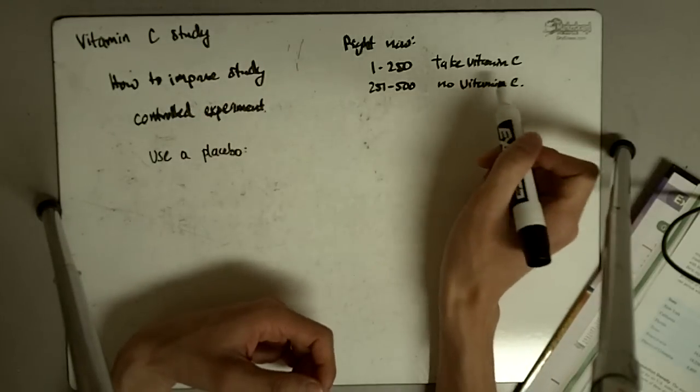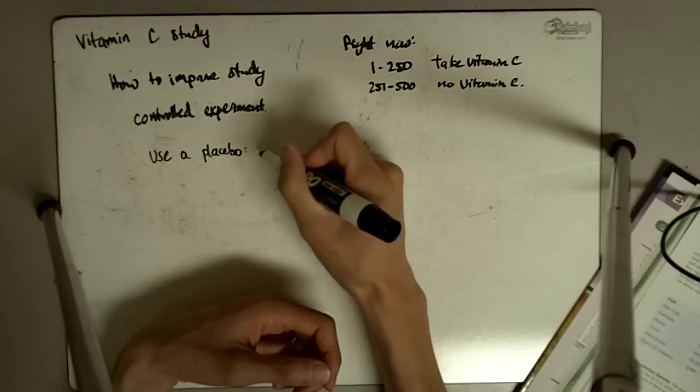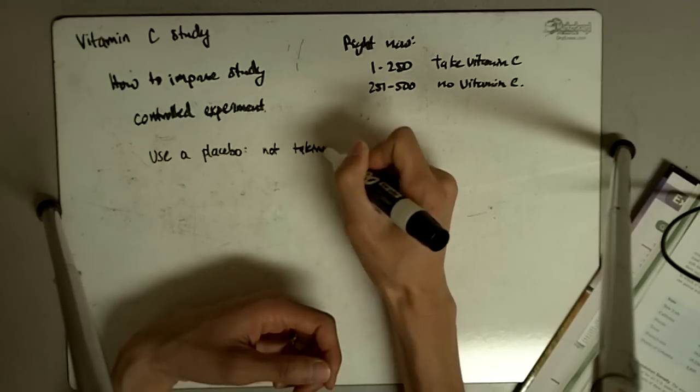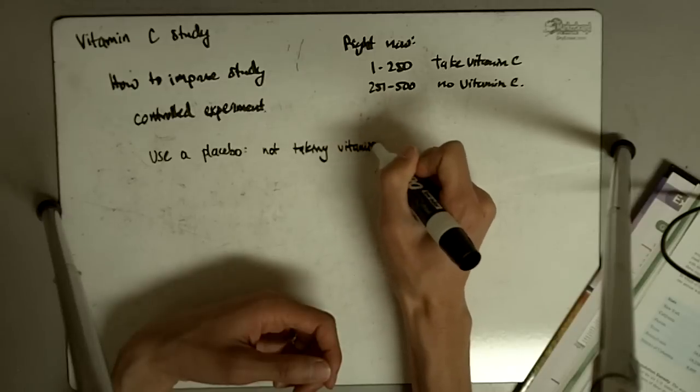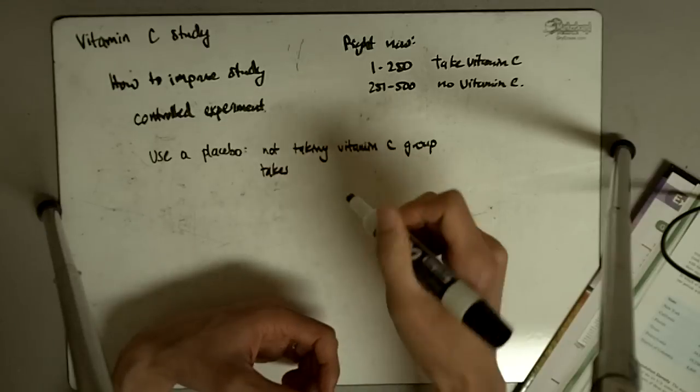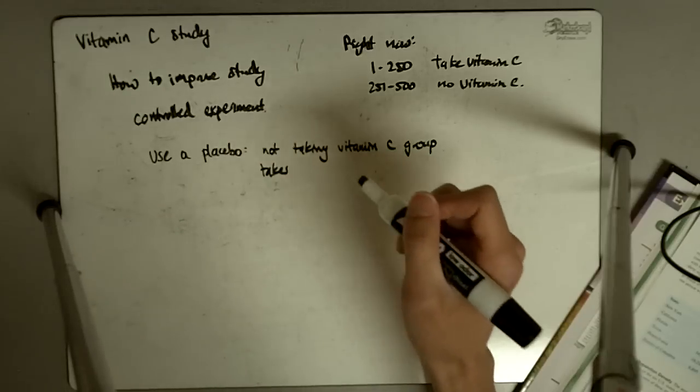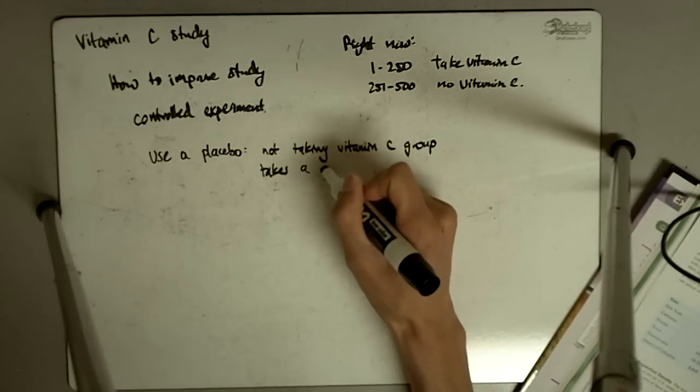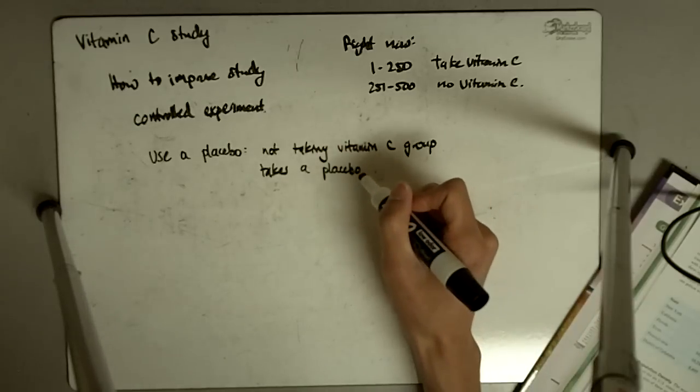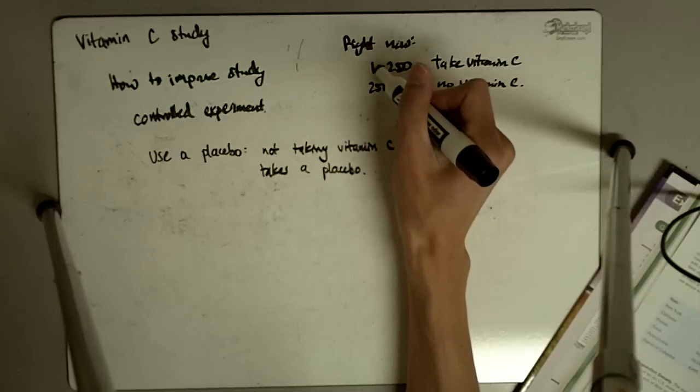So rather than say you guys take vitamin C and you guys don't take vitamin C, maybe the group who's not taking vitamin C takes a placebo. So there's some kind of pill, maybe that tastes acidic like vitamin C does, but takes a placebo. So they don't know whether they are taking vitamin C or not, just in case there could be a placebo effect, which is very common. So that could improve it.